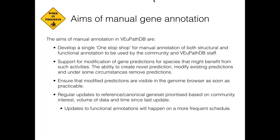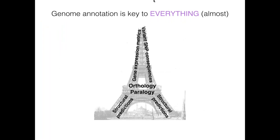Just a quick note: with functional annotation, if people want to integrate this kind of information, we still have user comments available, so people can use those to add functional annotation. This will be a replacement for some of those systems, but those systems will be in place until it is rolled out. So you can continue to use user comments, continue to send help desk messages to the curators, and they will make those edits on your behalf as they normally do.